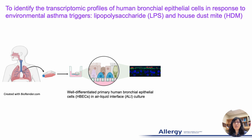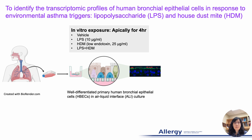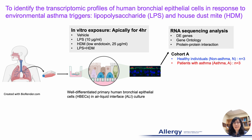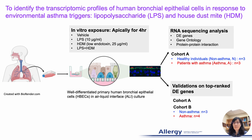Both LPS and HDM are known to trigger asthma exacerbations. When cells are well differentiated in air-liquid interface culture, we expose them to LPS, HDM, or a combination of both apically for four hours. We then performed RNA sequencing analysis to identify differentially expressed genes, protein interaction networks, and gene ontology. We then further validated top-ranked differentially expressed genes.